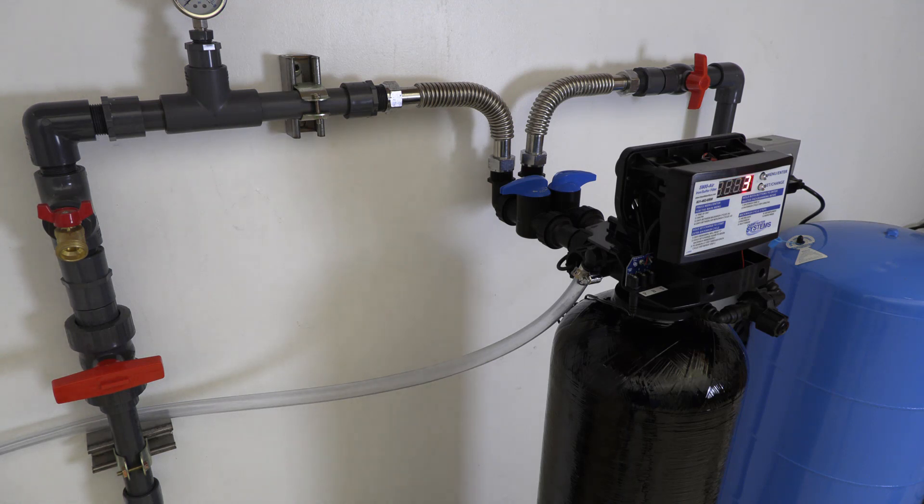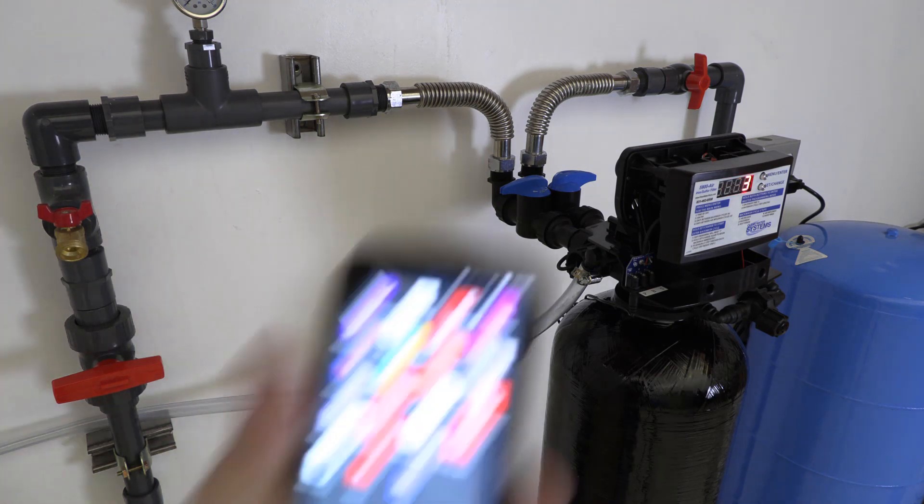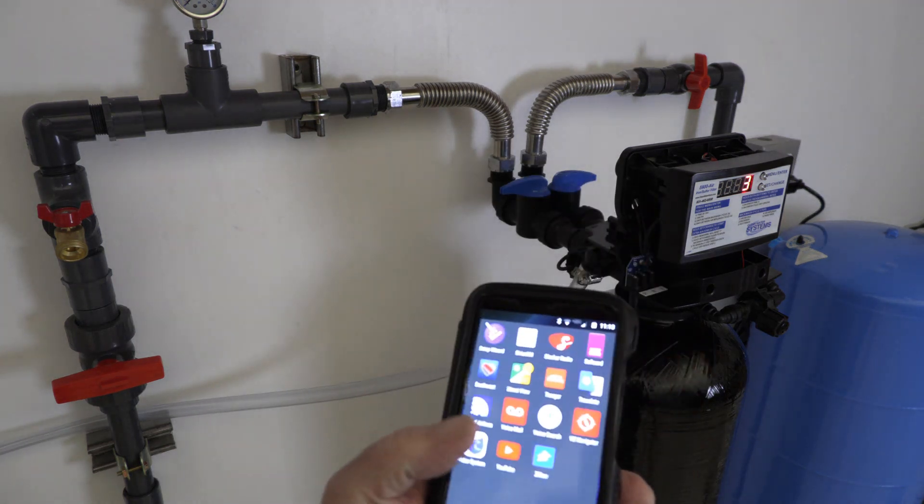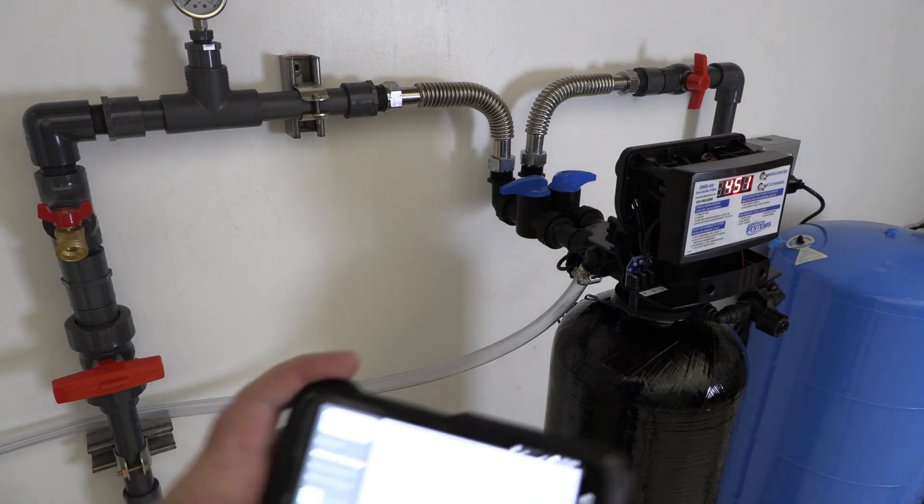For the first one, we want to use the backwash cycle, cycle number two, and the rapid rinse cycle, cycle number five. We'll skip both the rest period and cycle four air replenish. So I'm going to go ahead and do this using the Bluetooth.